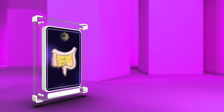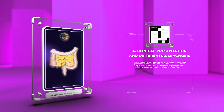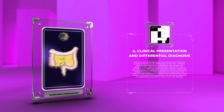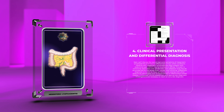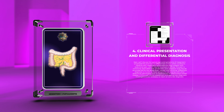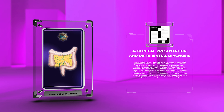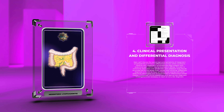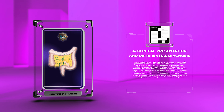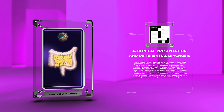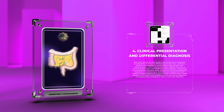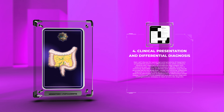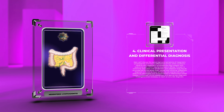Next, we'll discuss the typical signs and symptoms of mesenteric lymphadenitis and how to differentiate it from other conditions. Patients often present with abdominal pain, which may be localized or diffuse. This pain is commonly associated with tenderness upon palpation and may be accompanied by low-grade fever, nausea, and vomiting. Differential diagnosis is crucial, as these symptoms can overlap with other abdominal pathologies such as appendicitis or inflammatory bowel disease. A thorough clinical assessment and appropriate diagnostic investigations are necessary to reach an accurate diagnosis.